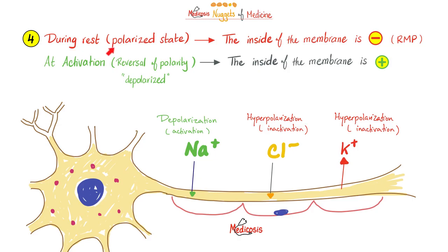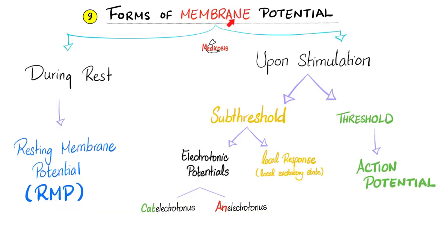During rest, or the polarized state, the inside of the membrane is more negative, but upon activation — aka a reversal of polarity or depolarization — the inside of the membrane becomes more positive as sodium comes into the nerve. Forms of membrane electricity or membrane potential: during rest, it's called the resting membrane potential.